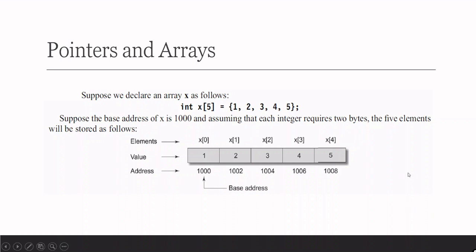Let us assume the base address of this array is 1000, and if we assume integer as 2 bytes, the address locations are 1000, 1002, 1004, 1006, 1008. The elements are x[0]=1, x[1]=2, and so on up to 5. This initial location of the array is called the base address of the array.